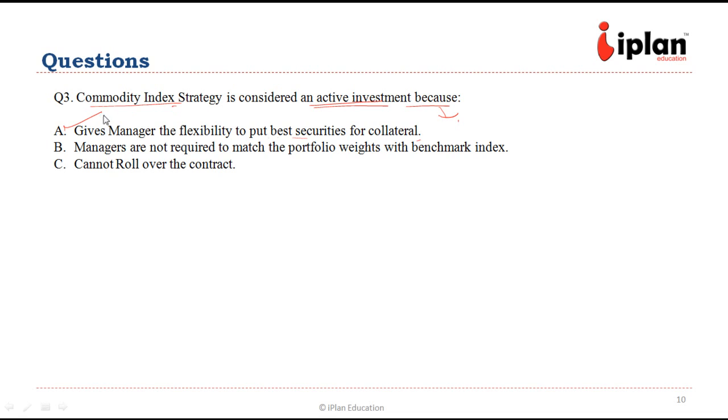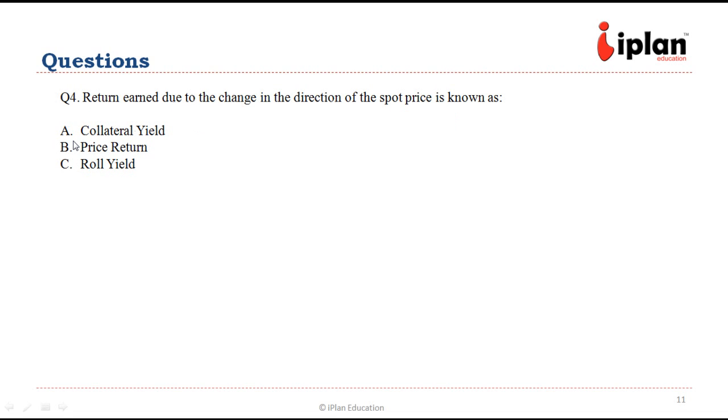Managers are not required to match portfolio weights with benchmark index—this is wrong because managers are required to match. Cannot roll over the contract—no, rollover of the contract happens in the case of commodity index strategy. So only A is correct.